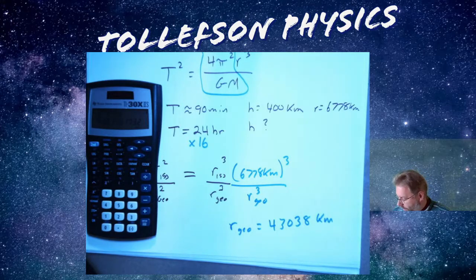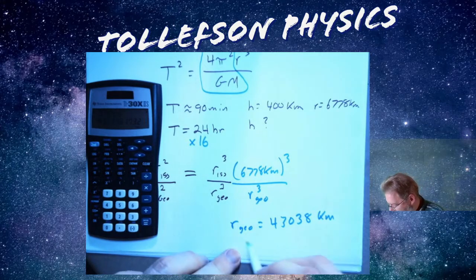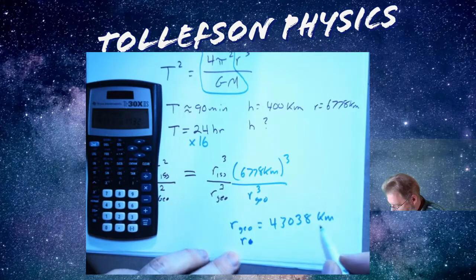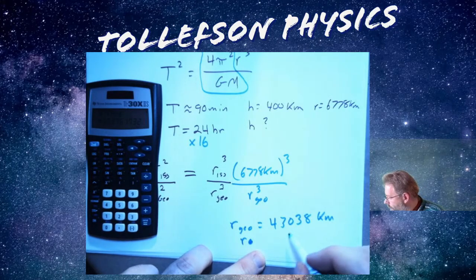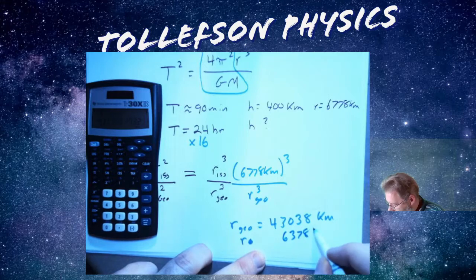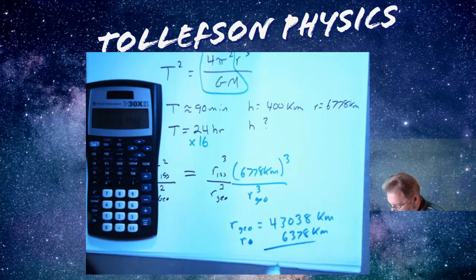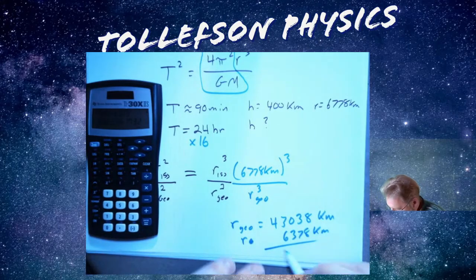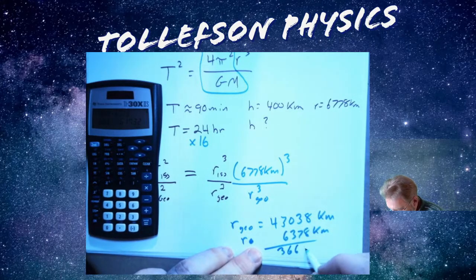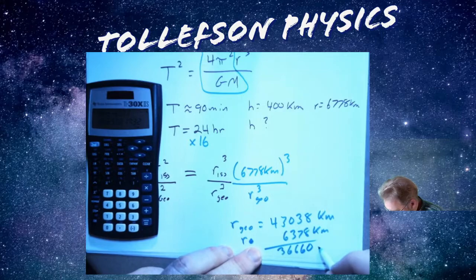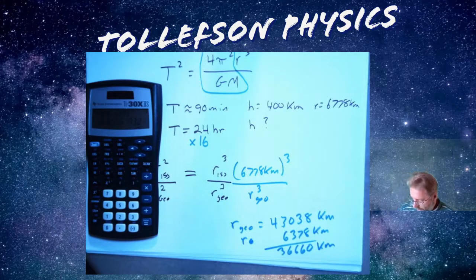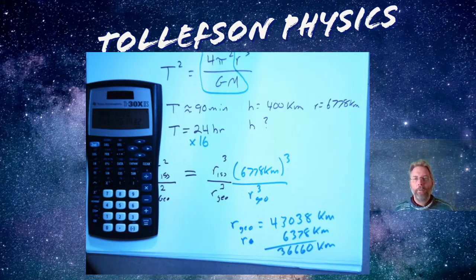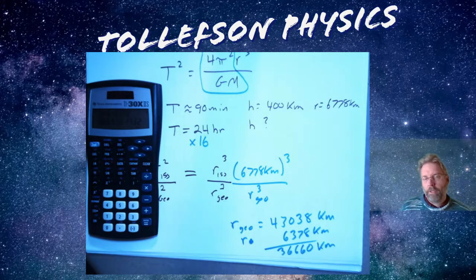And so that is the radius. I need to subtract off. Don't forget the radius of the earth is 6,378 kilometers. And so when I subtract those two numbers minus 6,378, I get 36,660 kilometers. So it's considerably higher above the earth.